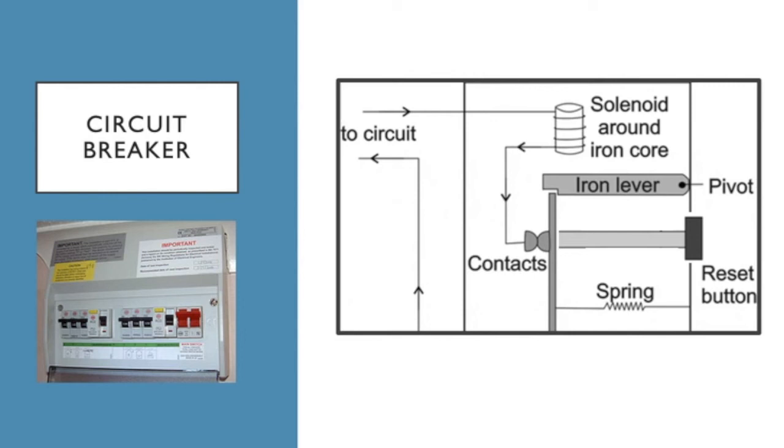Fuses are thin bits of metal that you have to replace over and over again if there's a fault. Circuit breakers are a lot easier because you can just press a button and they don't have to be replaced.